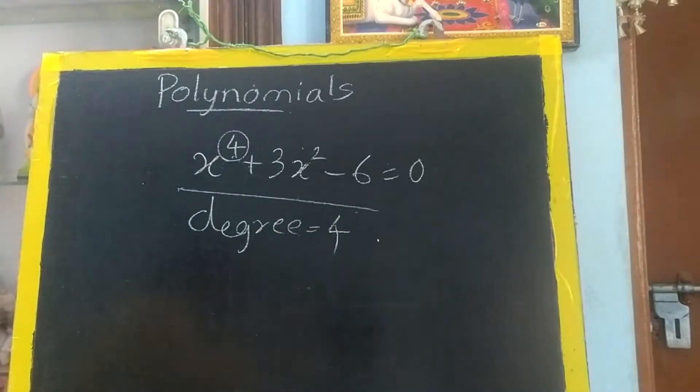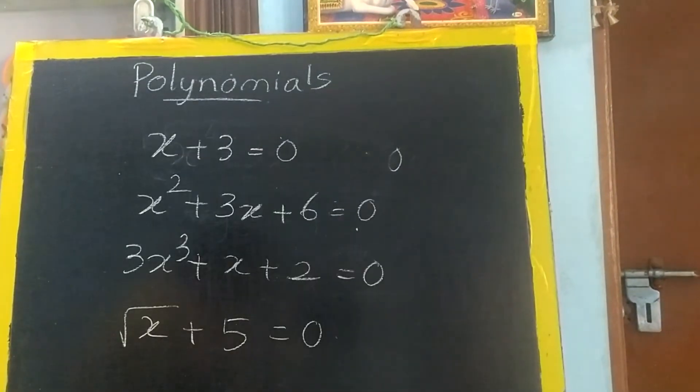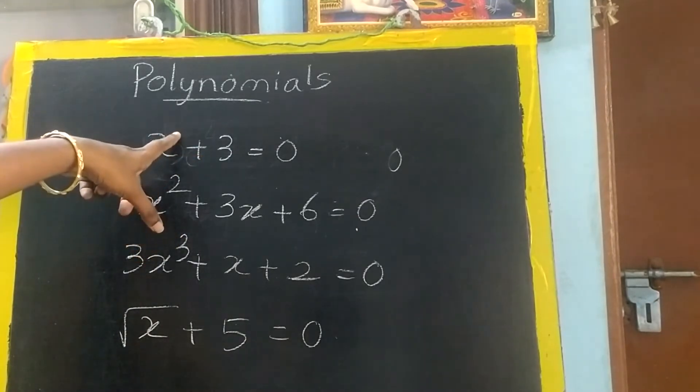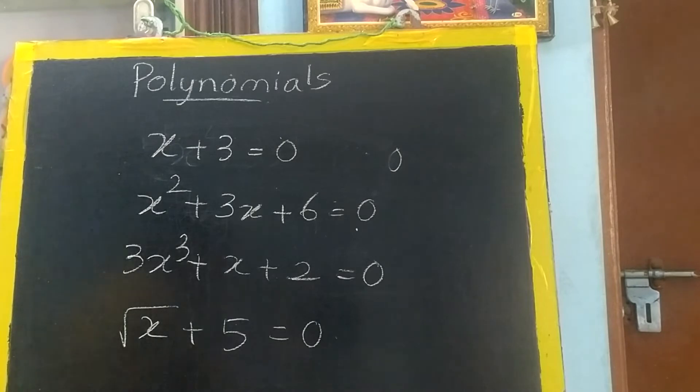So based on the degree it has a name also. Here you can check out the degree. This is x power 1. If there is no power it is called as 1, right? So this is called as linear polynomial. If the degree is 1, it is called linear polynomial.